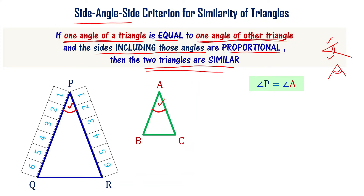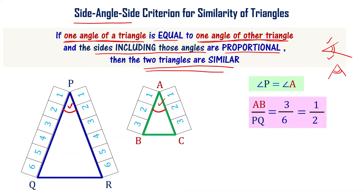For example, PQ is 6 units and PR is also 6 units. AB and AC are 3 units each. So we can say that AB by PQ equals 1 by 2, and AC by PR is also equal to 1 by 2. The sides including those angles are proportional.